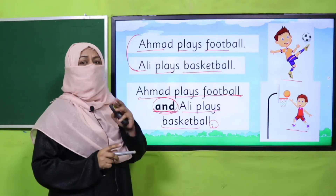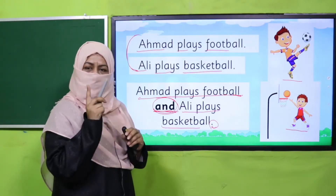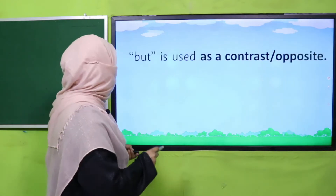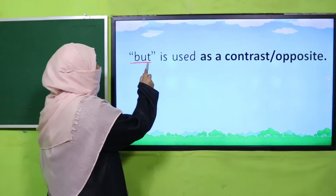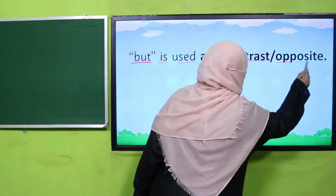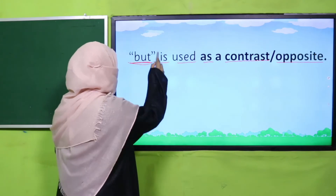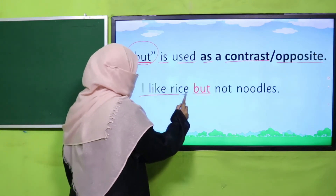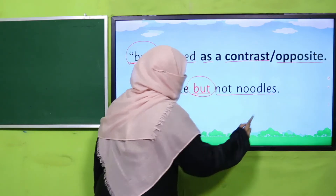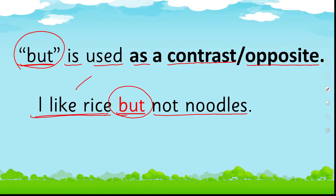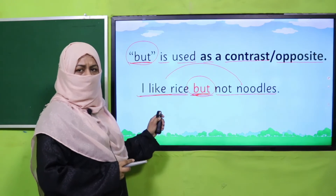The next joining word we are going to learn is 'but.' But is used as a contrast or opposite — when two sentences or two things are opposite to each other, we join them using 'but.' For example: 'I like rice but not noodles.' This means I like rice but I do not like noodles — they are opposite to each other. That's why we use 'but' between these two options. Do you understand?